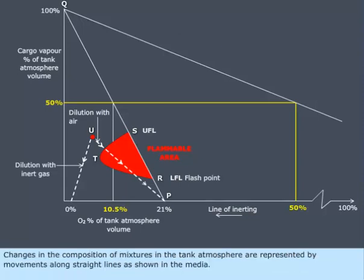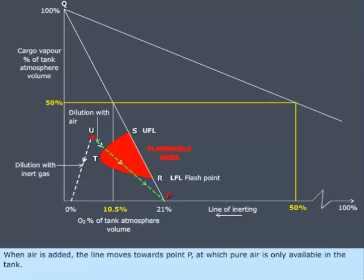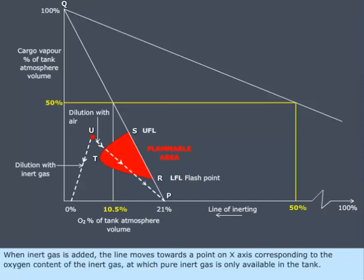Changes in the composition of mixtures in the tank atmosphere are represented by movements along straight lines as shown in the media. When air is added, the line moves towards point P, at which pure air is only available in the tank. When inert gas is added, the line moves towards a point on the x-axis corresponding to the oxygen content of the inert gas, at which pure inert gas is only available in the tank.